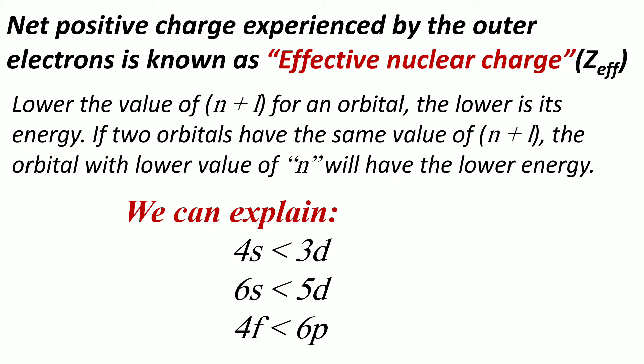We can explain that the energy of the 4s orbital is less than the 3d orbital because the n plus l value for 4s is 4 plus 0 equals 4, since l for an s orbital is 0. For the 3d orbital, l equals 2, so 3 plus 2 equals 5. Since 5 is greater than 4, the energy of the 3d orbital is more than the 4s orbital.